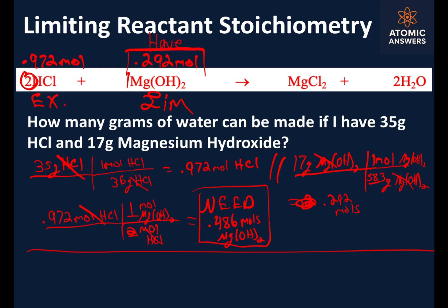We can only make as much water as we have of our limiting reactant, Mg(OH)₂. So we start with 0.292 moles of Mg(OH)₂ and go from moles of magnesium hydroxide to moles of water — because balanced chemical equations are written in mole-to-mole ratios. Mg(OH)₂ cancels out, and from the balanced equation we have 2 moles of water for every 1 mole of Mg(OH)₂.